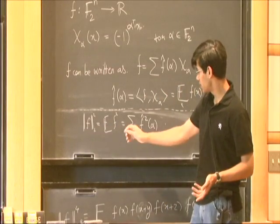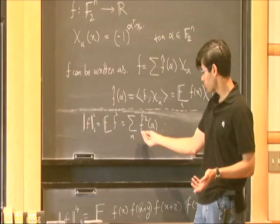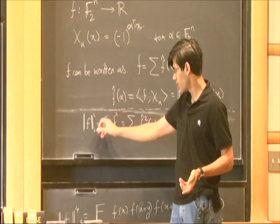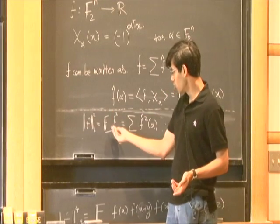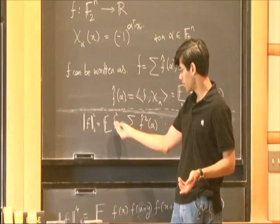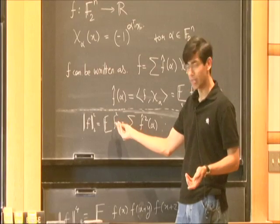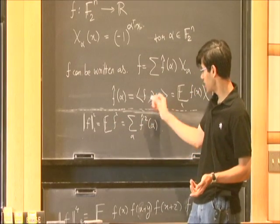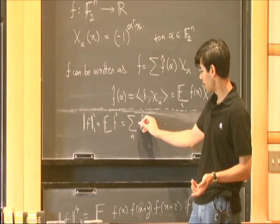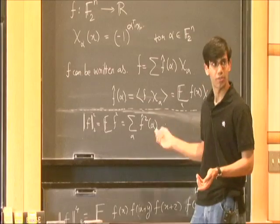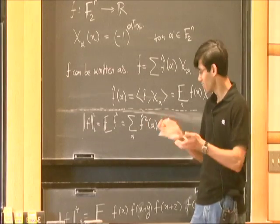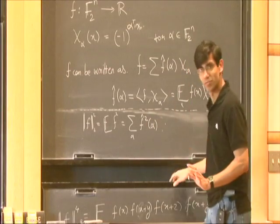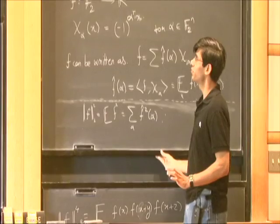The Parseval identity says that if you look at the L2 norm of f squared — the expectation of f squared — or if you look at it in the Fourier basis by adding up the squares of the Fourier coefficients, it's the same. Just some very basic stuff.